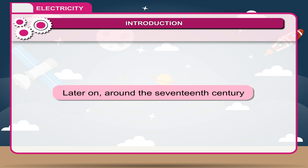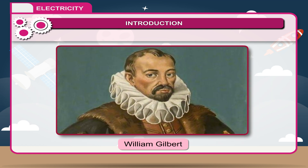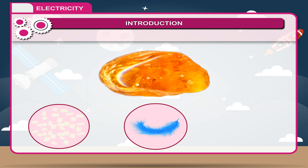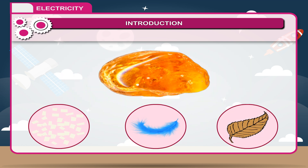Later on, around the 17th century, William Gilbert explained the experiment of Thales. He explained satisfactorily about the attraction of certain tiny substances by amber rubbed with wool. The substances which develop this property of attraction are said to be charged with electricity.